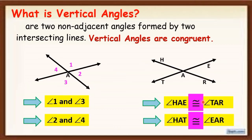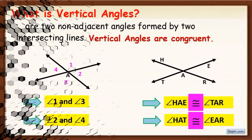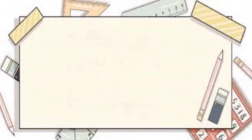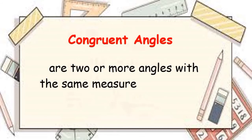So the measure of vertical angles are congruent. When we say congruent angles, these are two or more angles with the same measure.